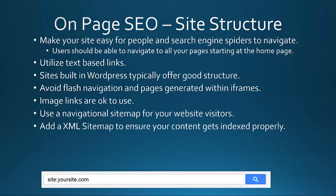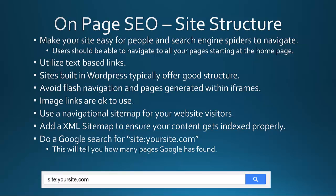You could use a plugin like the WordPress XML sitemap plugin. Do a Google search for "site:yoursite.com" — this works for looking up title tags as we've previously mentioned, and also for your site structure if you're trying to get an idea of how the search engines are finding your site. Are they indexing all your pages of content, or just some of them? This will tell you how many pages Google has found.